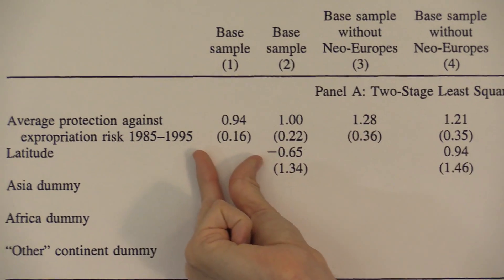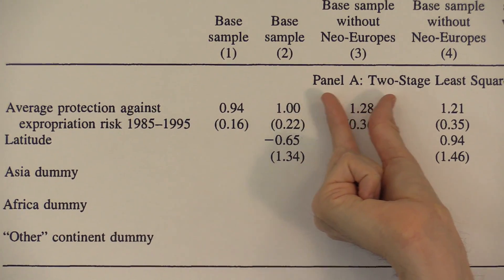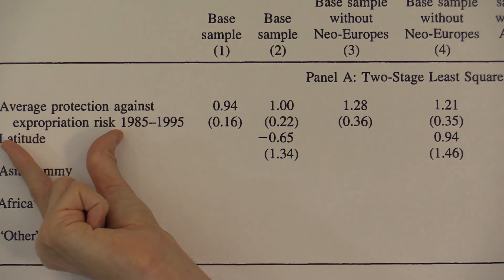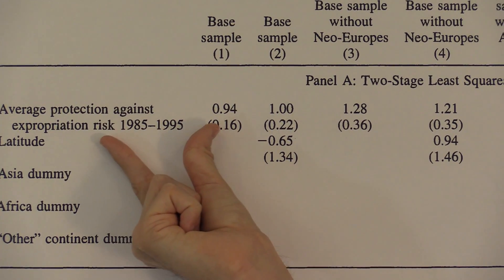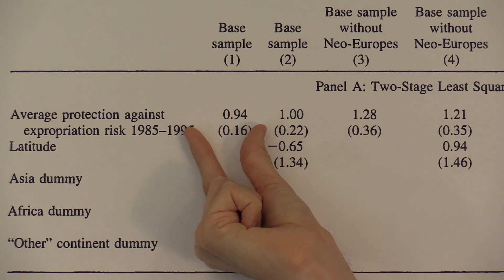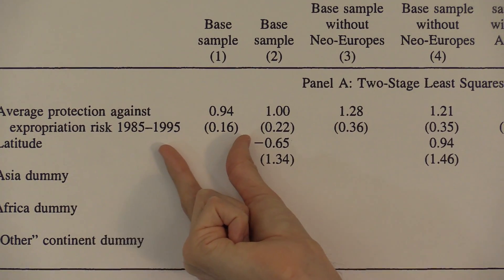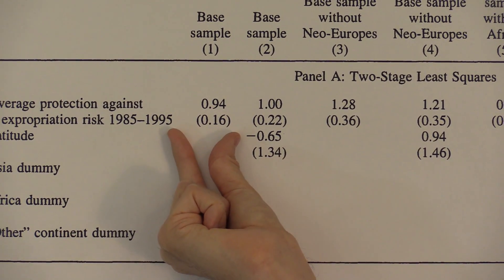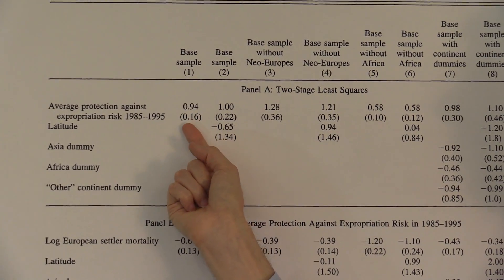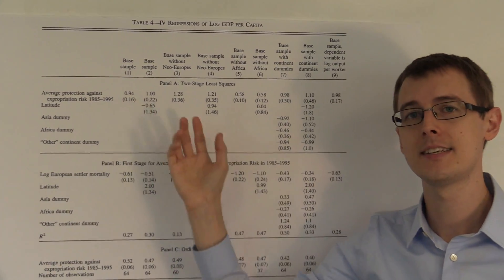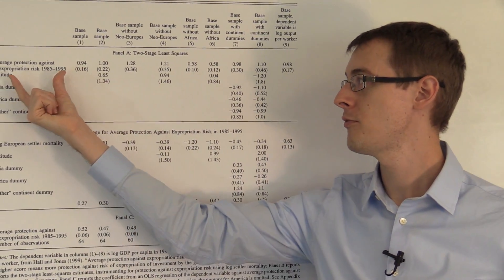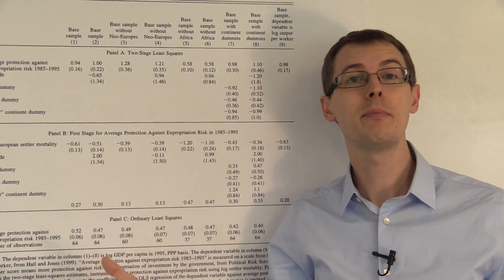That's right here — this first column in panel A: 0.94. Panel A is labeled two stage least squares, which is a key term for instrumental variables analysis. We're looking at the coefficient on average protection against expropriation risk, and that's 0.94. This is our treatment variable, and our outcome variable is log GDP per capita. So this is telling us the true causal effect of our treatment on our outcome. If we construct a confidence interval using the standard error in parentheses, we see that this point estimate is statistically significantly not zero — it's positive. So there is a true causal effect of property rights on economic development. That's the main result in this paper, computed using instrumental variables analysis.